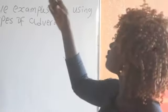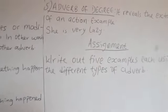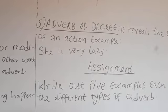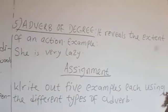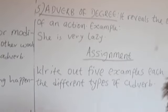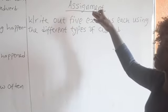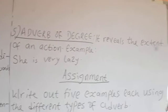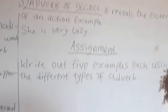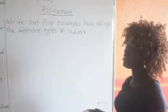We also have adverb of degree. The adverb of degree reveals the extent of an action. For example: she is very lazy. I can say she is lazy, but when I put 'very lazy' there, it is telling you the extent of her laziness. She is extremely wicked. She is very good. This is an example of adverb of degree — it reveals the extent of an action.